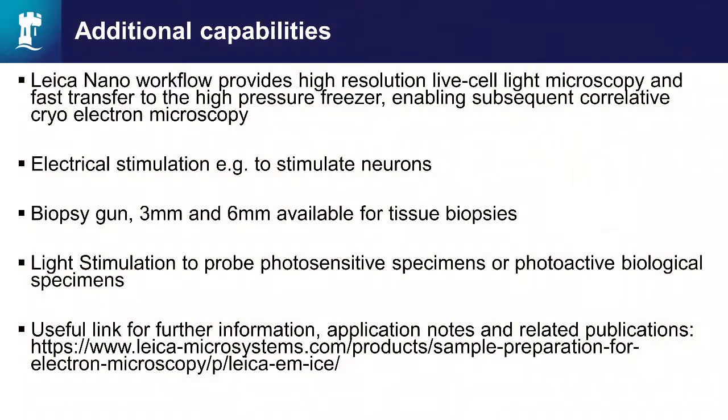There are additional units available for the high pressure freezer. There is a workflow available that enables you to image your cells using a light microscope and then extremely rapidly transfer those samples to the high pressure freezer enabling subsequent correlative cryo light microscopy. That's just been developed. There's also electrical stimulation or light stimulation units available. There's a biopsy gun enabling you to take either six or three millimeter tissue biopsies. Leica's website is full of useful information, application notes, publications. There's also some very good YouTube videos out there that describe the process and you can actually see what happens inside the instrument which is quite cool.